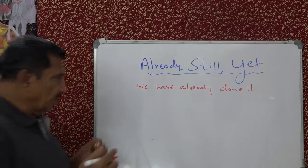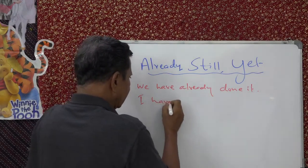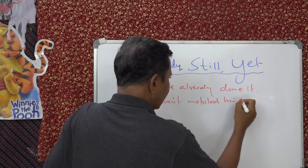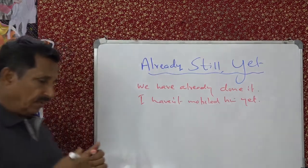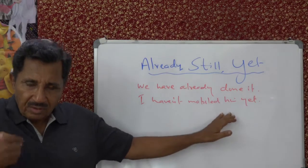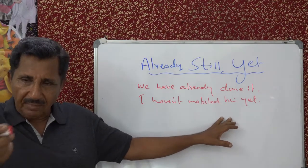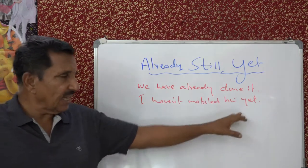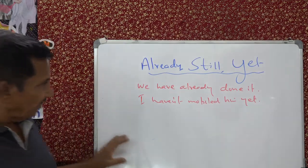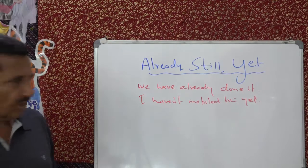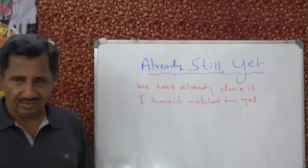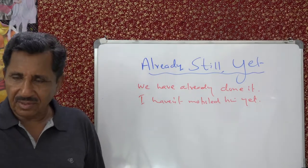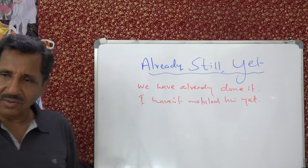What does that mean? 'I haven't mobiled him yet' means it is expected of me to ring him up, but I did not do it. The action did not take place. I haven't played basketball yet. So by six o'clock, when the coach asks, 'Have you played basketball this evening?' you say, 'No, I haven't played basketball yet.'